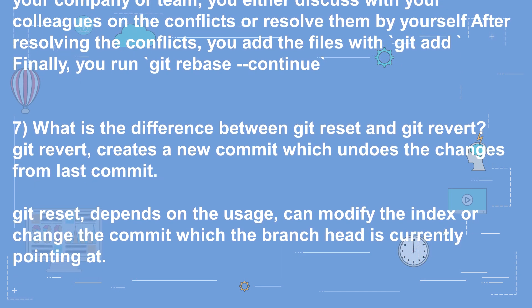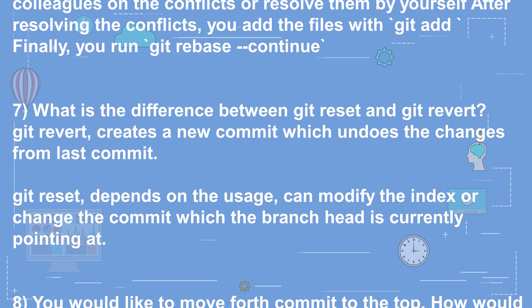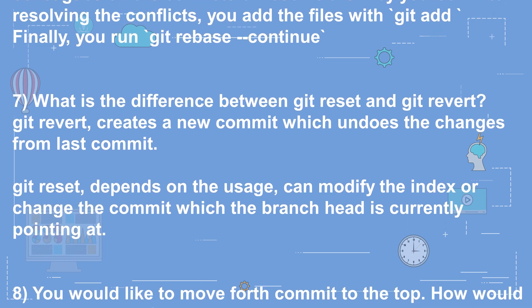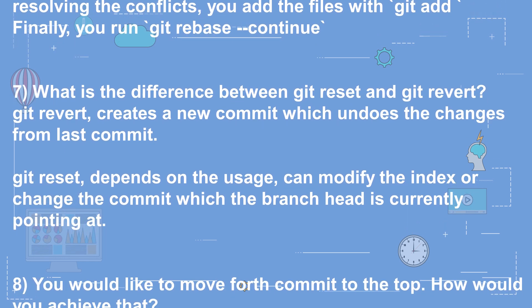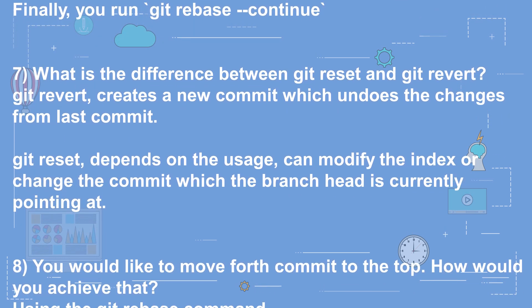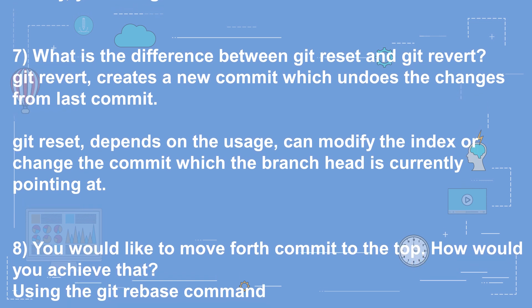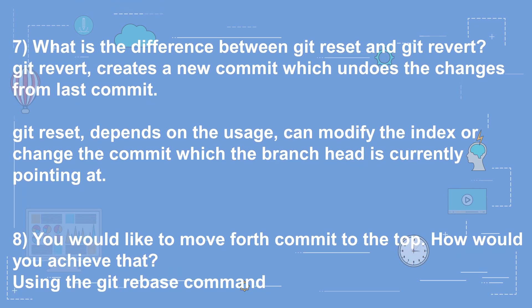Question 8: You would like to move the fourth commit to the top — how would you achieve that? Answer: Using the git rebase command.